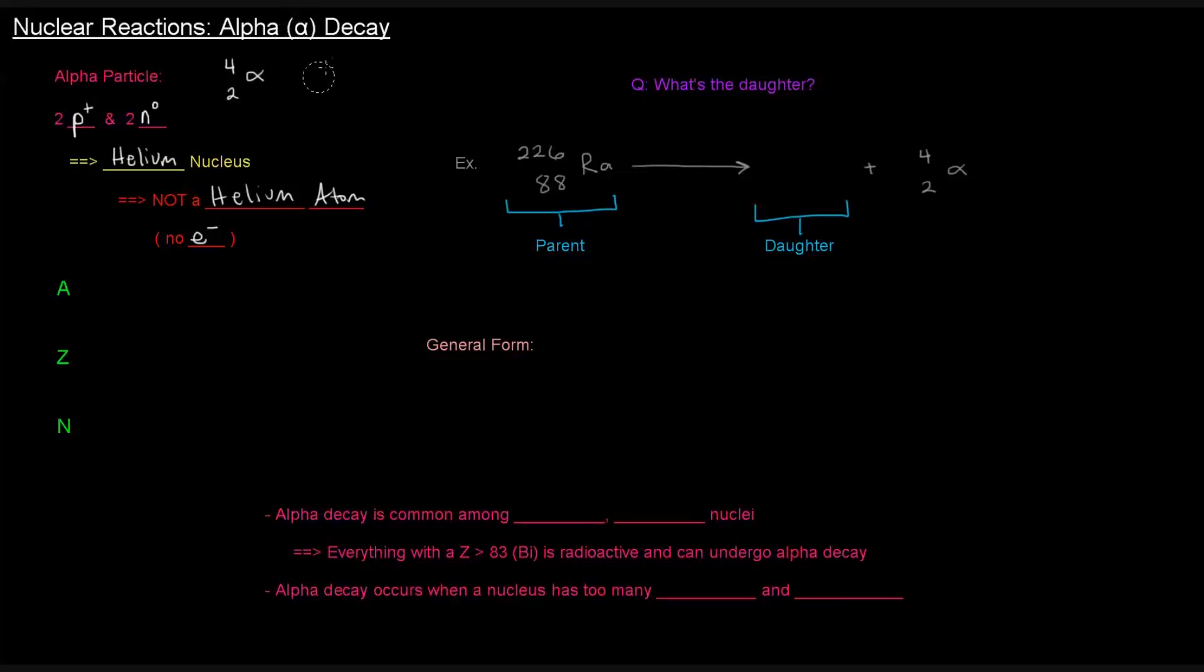Sometimes, though, it's represented like this, as a helium atom would be, which is, for some people, confusing because people think an alpha particle is a helium atom. It's not. It's a helium nucleus. There are no electrons.